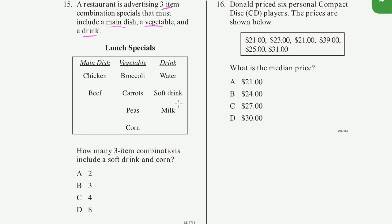So three item combinations that include a soft drink and a corn. So let's reread what the condition is. A restaurant is advertising three item combination specials that must include a main dish, a vegetable, and a drink. So you pick one from each of these buckets.